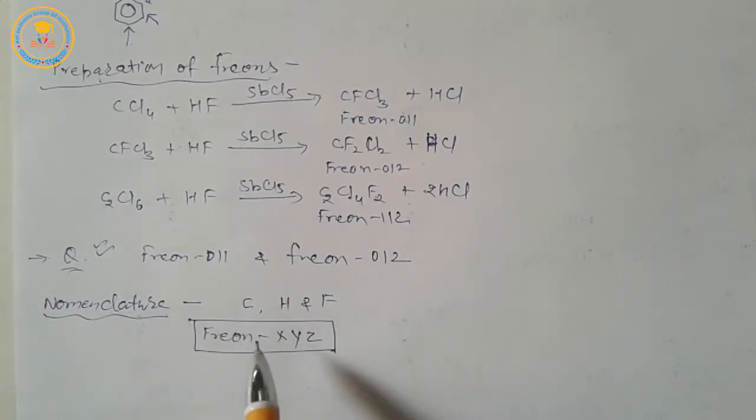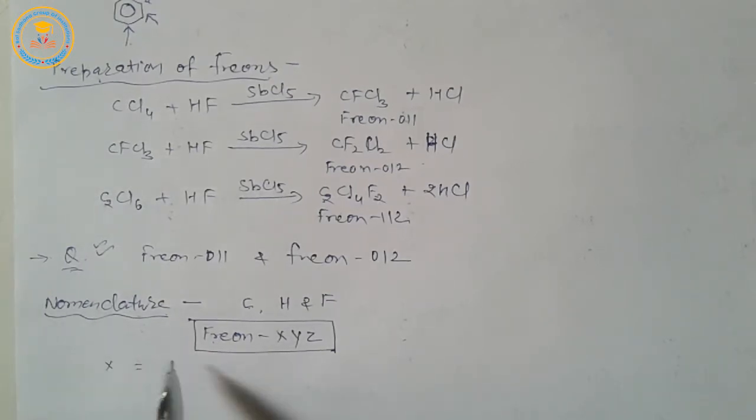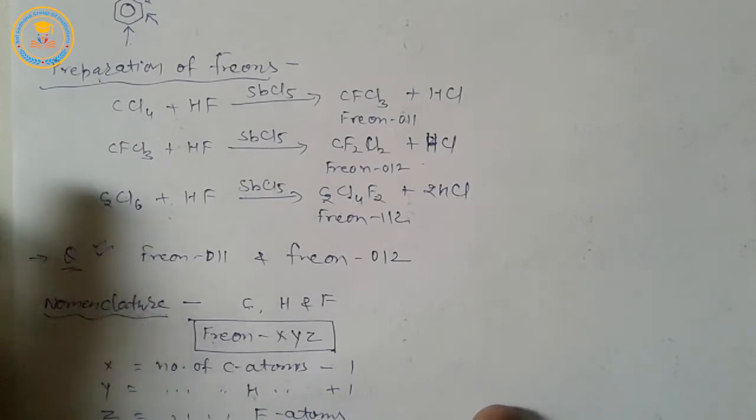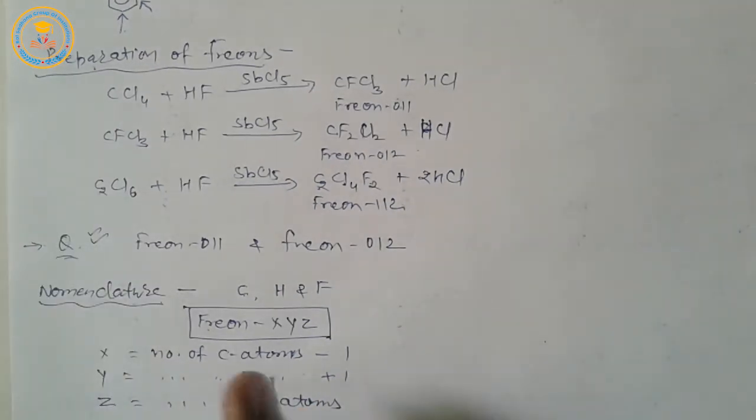Here, X equals number of carbon atoms minus 1. Y equals number of hydrogen atoms plus 1. And Z equals number of fluorine atoms. Very important formula for nomenclature of freons.